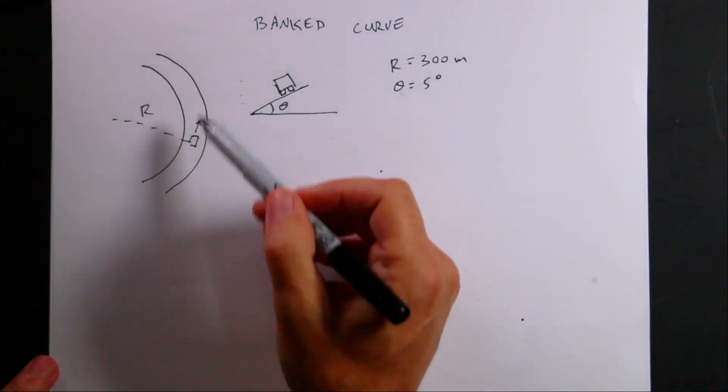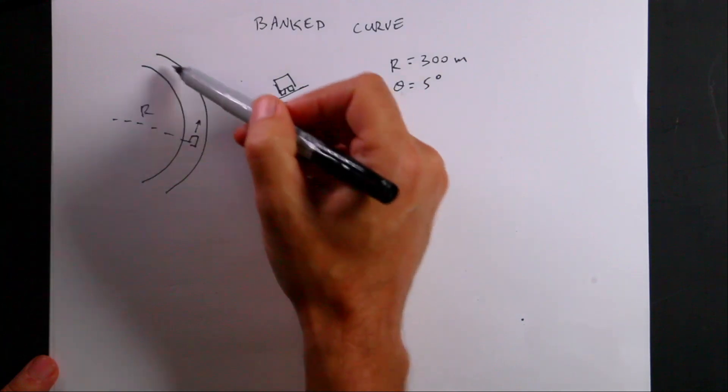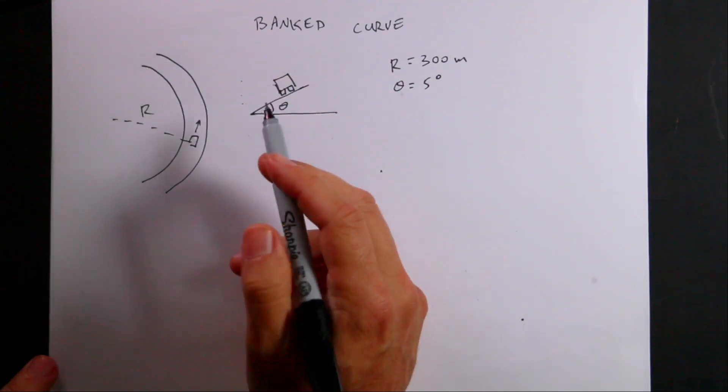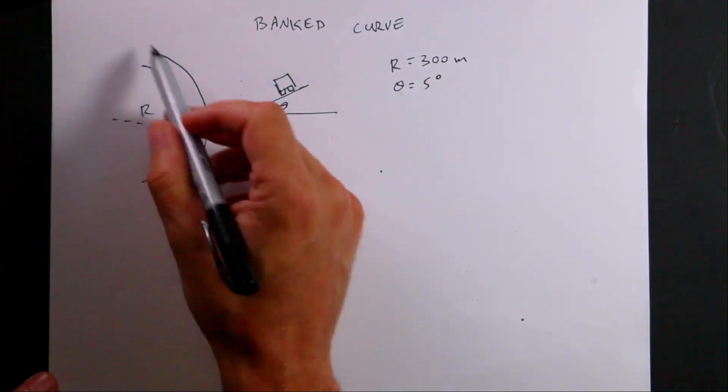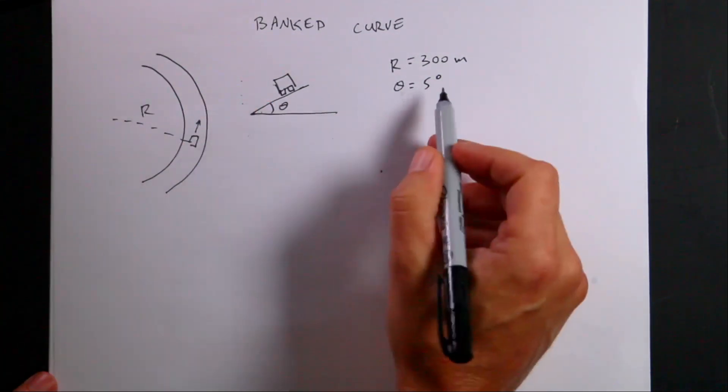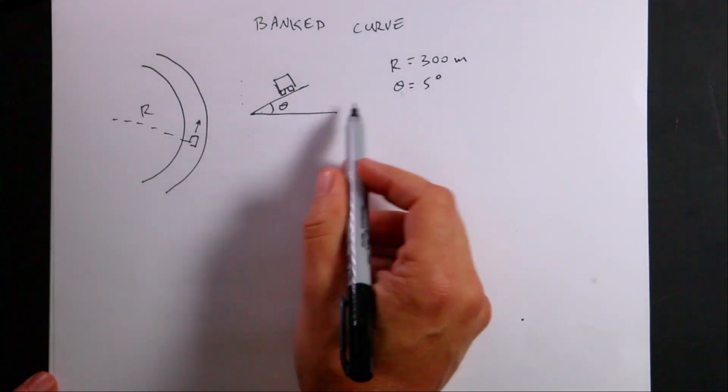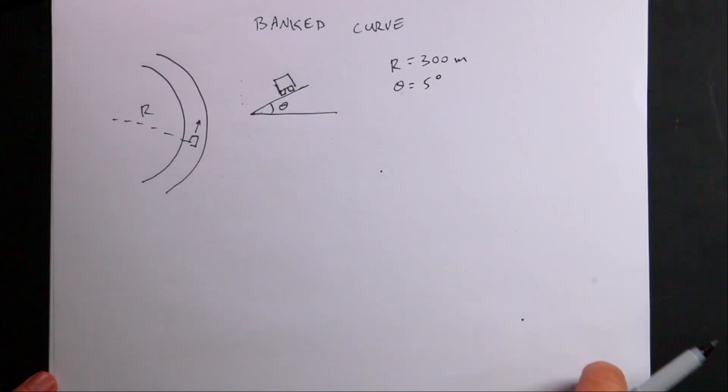Here's a map, and in this map you can see a car going around a curve. This is a banked curve. The question is, if the radius of curvature of that road is 300 meters and the angle is banked at 5 degrees, how fast should the car go?